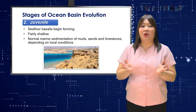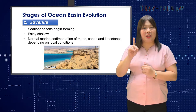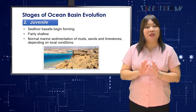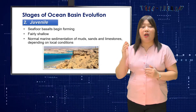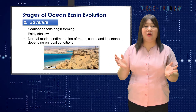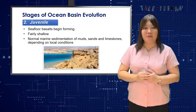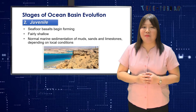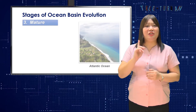Stage 2 is described as juvenile. Seafloor basalts begin forming as continental sections diverge. Initially, the young marine basin is fairly shallow. If repeated influxes of seawater become wholly or partly evaporated, salt deposits will accumulate. Otherwise, there will be normal marine sedimentation of muds, sands, and limestones depending on local conditions. One of the clearest examples of a young ocean basin is the Red Sea.